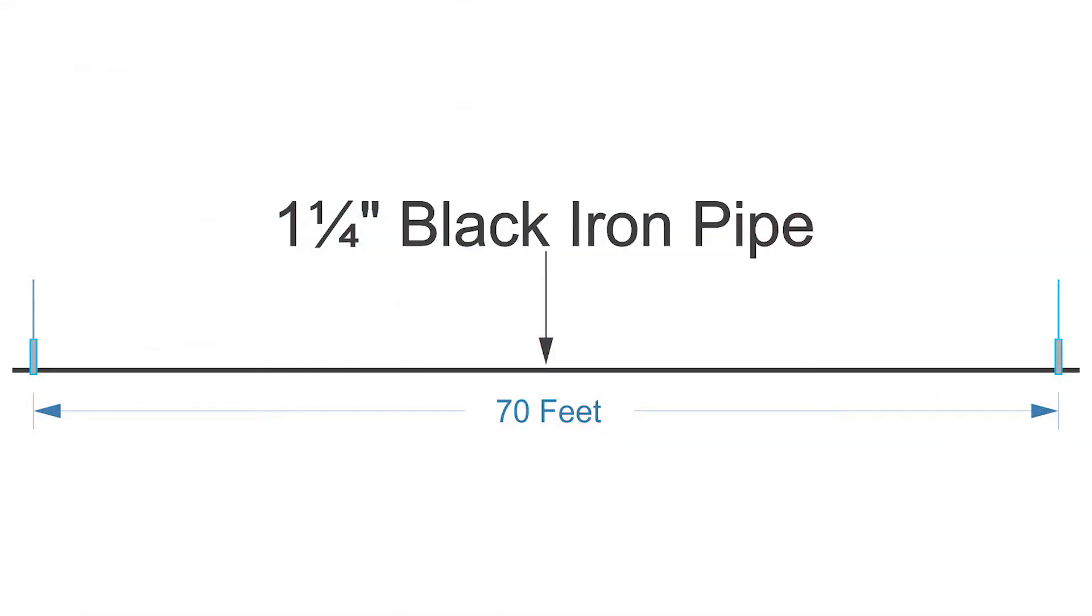To show you how to calculate hanger spacing, we'll look at this example. We have a one and a quarter inch black iron pipe that is 70 feet long. How many hangers do we need?